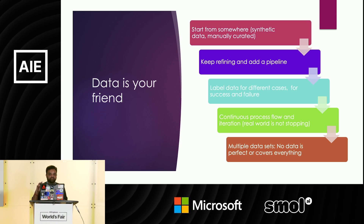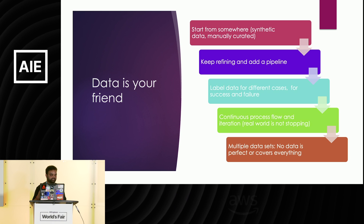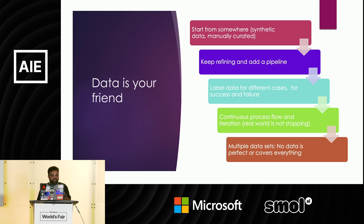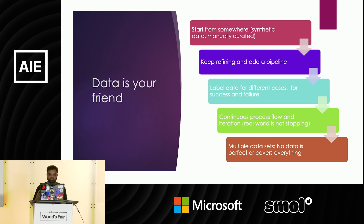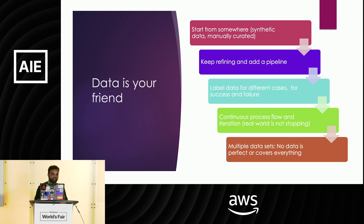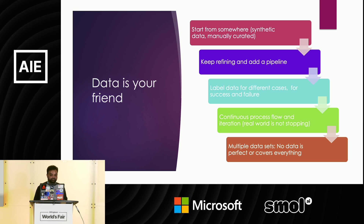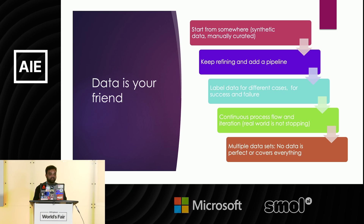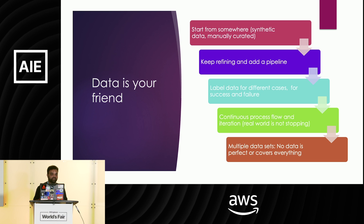When you think about data in evals, it's a continuous improvement process. Every time you generate some output, you need to observe the system and keep refining your dataset. You need to label your data accordingly, covering multiple flows or application prospects. One important lesson from experience: one dataset is never sufficient. When thinking about evals, you need multiple datasets based on the flows, based on the applications, and whatever you are trying to achieve.